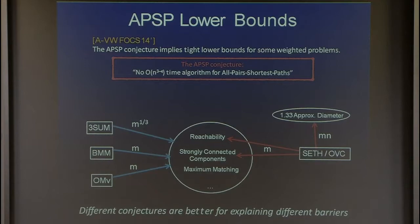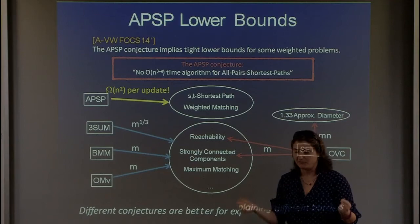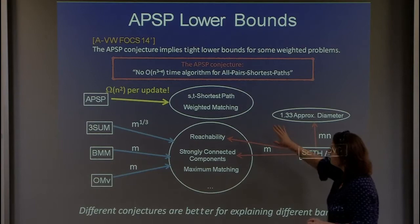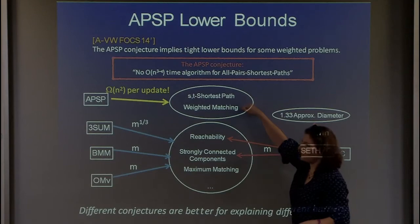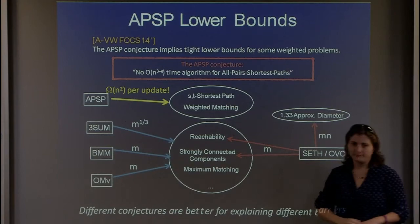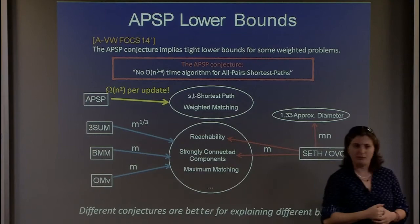For weighted problems, we assume the all-pairs shortest paths conjecture: APSP cannot be solved in N to the 3-minus-epsilon time. Assuming this, you can add problems like maintaining the distance between two fixed nodes S and T under edge updates, and maintaining maximum weight matching — both requiring N-squared time per update. The trivial algorithms for both run in N-squared for dense graphs, so that's tight. For sparse graphs the reductions are more complicated because we lack a simple problem like negative triangle.